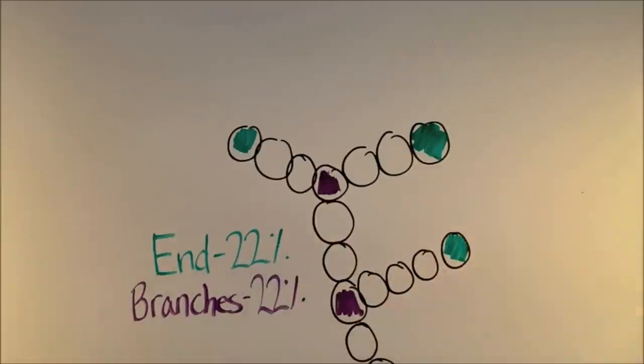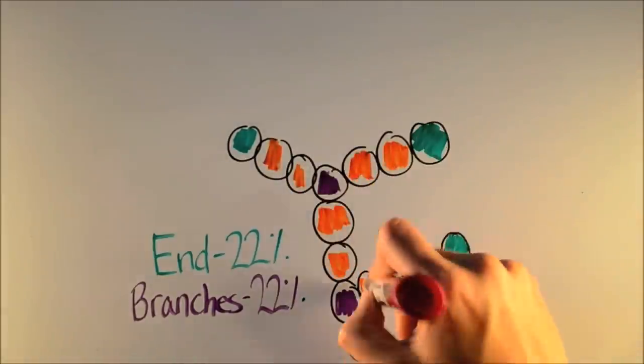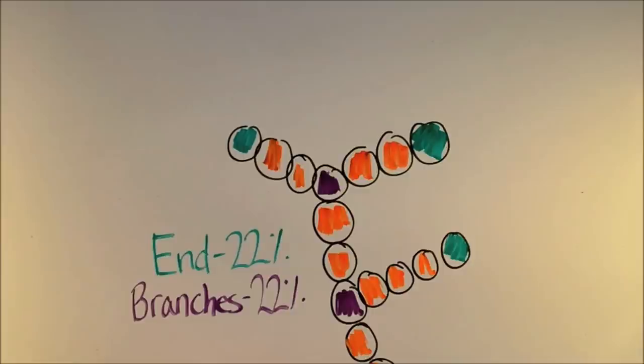Balls that are branching points make up 22% of the population, and the rest are connectors. This is always true, even if you change the size of the balls or the number of the balls.